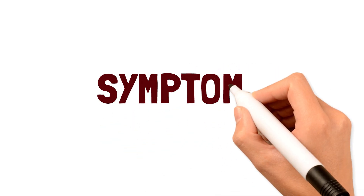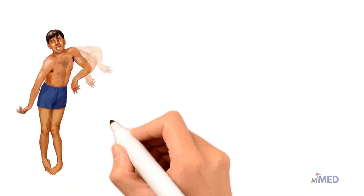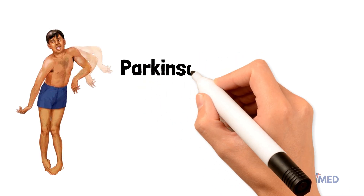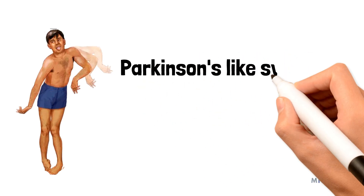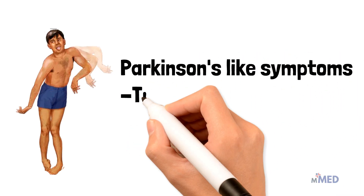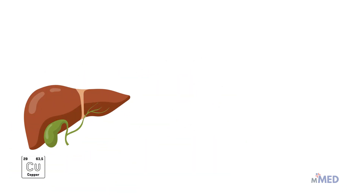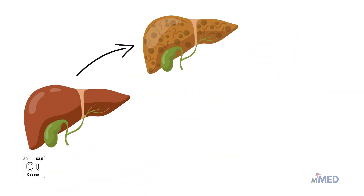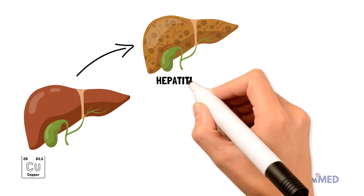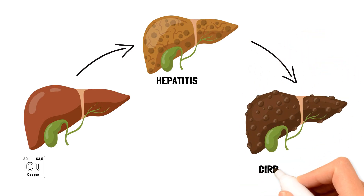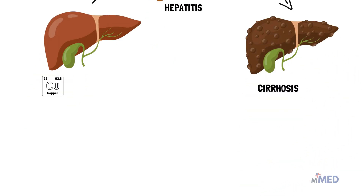Symptoms include Parkinson's-like symptoms secondary to copper deposits, such as tremor and bradykinesia, meaning slow movements. Copper deposition in the liver leads to chronic hepatitis, which is the inflammation of liver cells, that eventually leads to cirrhosis.